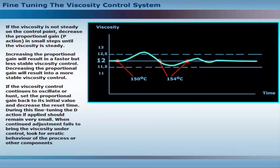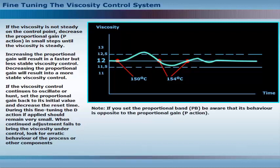During this fine-tuning, the D-action, if applied, should remain very small. When continued adjustment fails to bring the viscosity under control, look for erratic behavior of the process or other components. Note: if you set the proportional band, be aware that its behavior is opposite to the proportional gain.